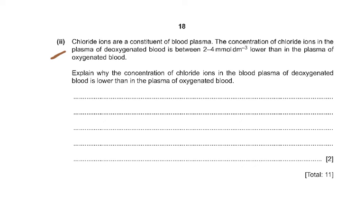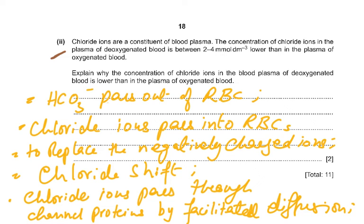Chloride ions are a constituent of blood plasma. The concentration of chloride ions in the plasma of deoxygenated blood is 2 to 4 mmol/dm³ lower than in oxygenated blood. This is because hydrogen carbonate (HCO3-) ions pass out of the red blood cells into the plasma, and chloride ions pass from the plasma into the red blood cells to replace these negatively charged ions - this is called the chloride shift. The chloride ions pass through channel proteins by facilitated diffusion.